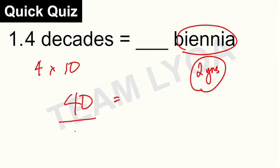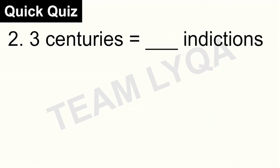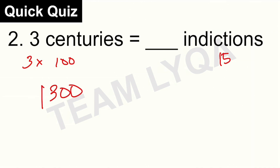All we have to do is divide 40 by 2, which would be 20. So that is 20 — or 4 decades. Next is 3 centuries and indictions. Three centuries is 3 times 100, or 300 years. Indictions are 15 years each, so all we have to do is divide 300 by 15, and we get 20 indictions.